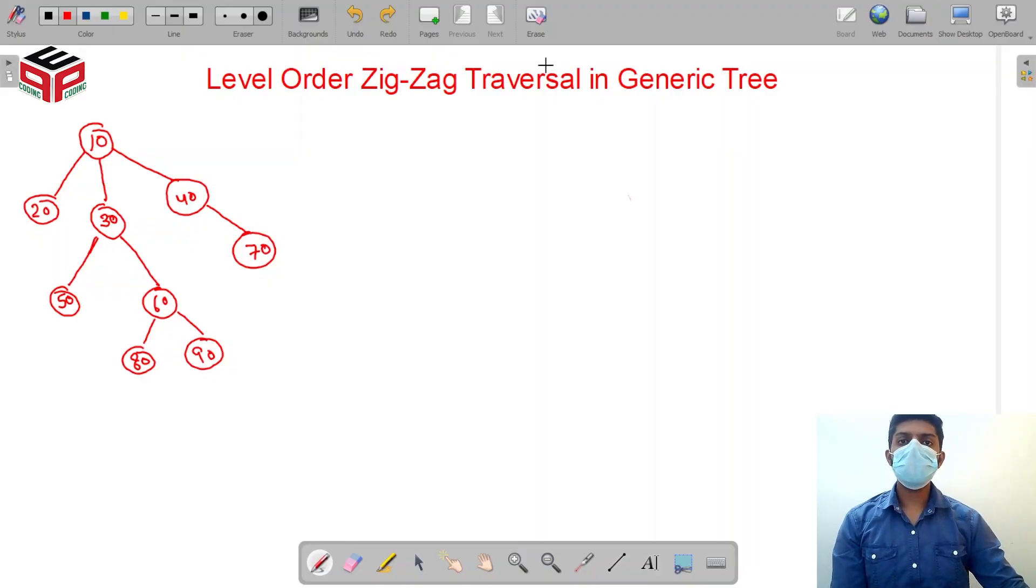Hi, I hope you're doing awesome. The question we are seeing today is level order zigzag traversal in a generic tree. In the previous questions we have seen the level order traversal, then level order line-wise traversal. This time we are seeing level order zigzag traversal.